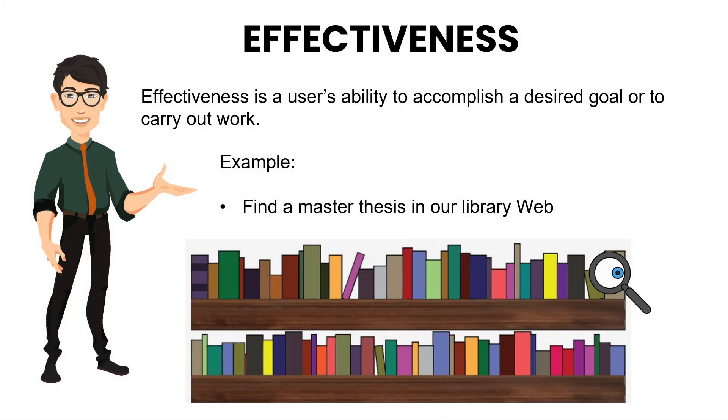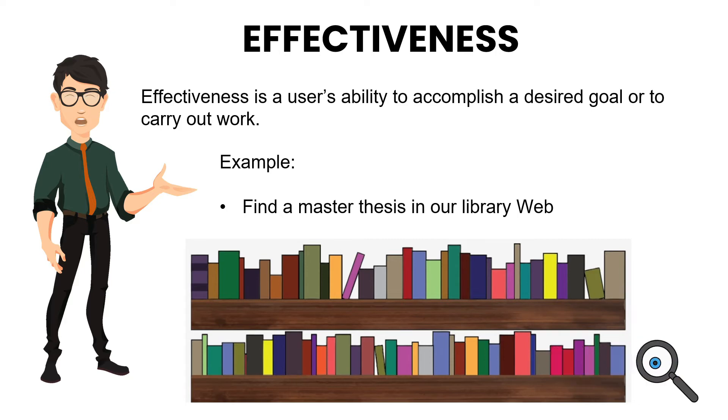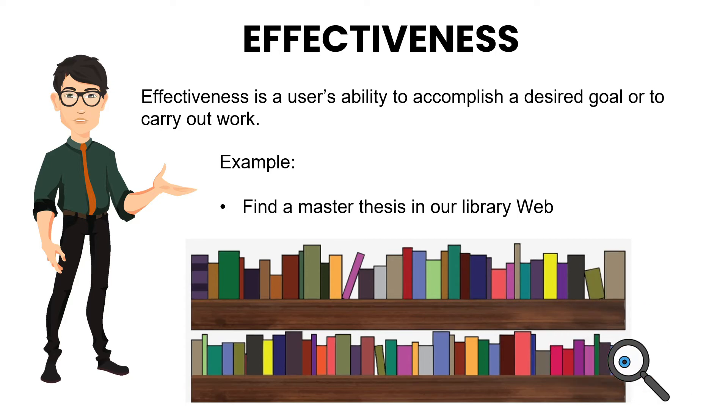Effectiveness is a user's ability to accomplish a desired goal or to carry out work. For example, finding a master thesis in our library web.